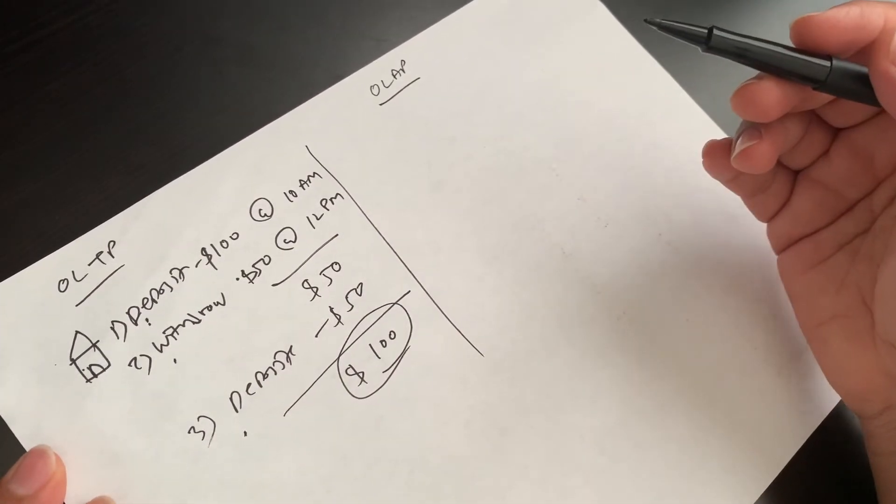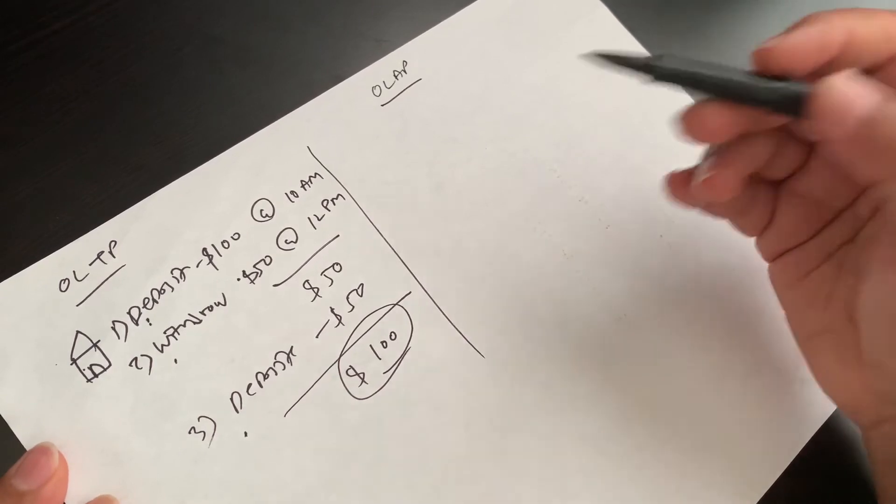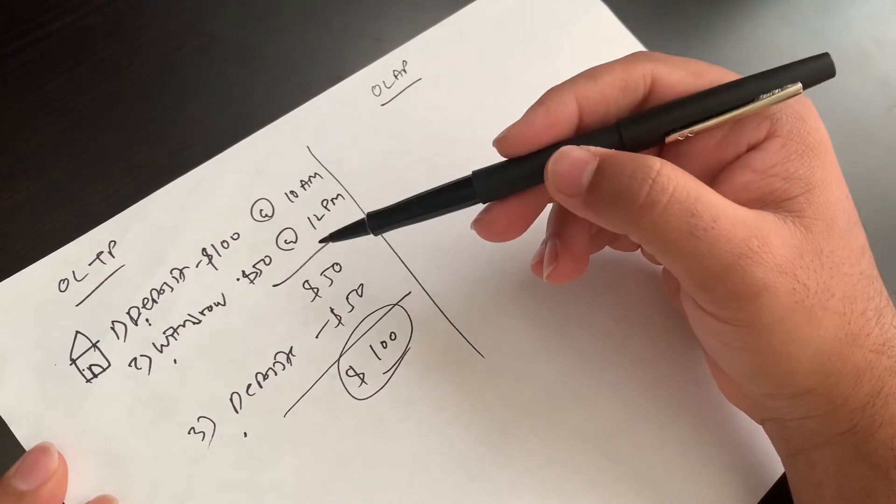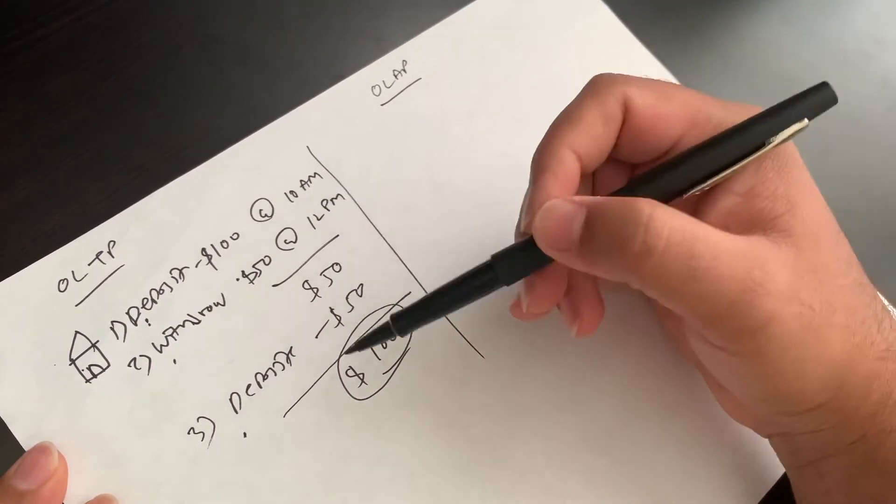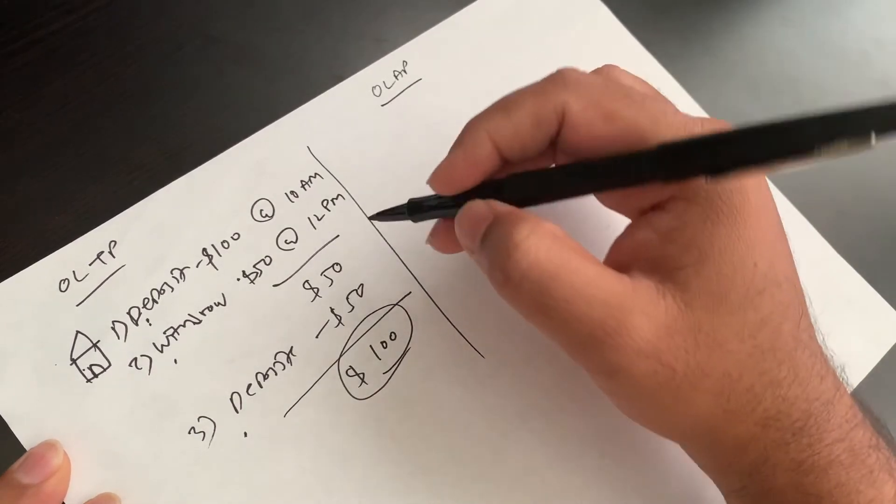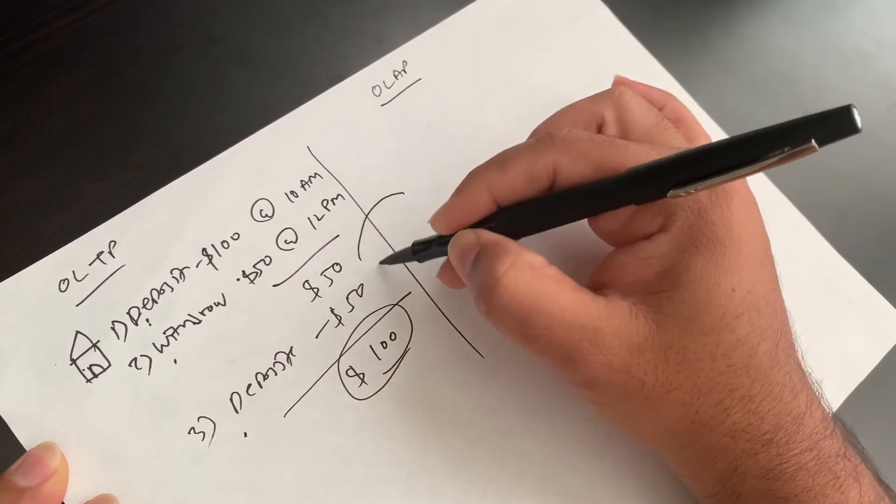In banking, when you go to branches, they put all the entries in your account, three entries per day. But when data moves from OLTP to OLAP...